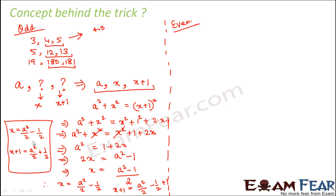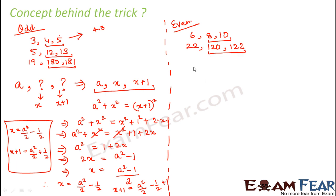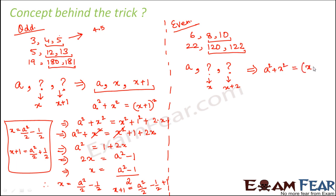On similar lines, we can derive the relationship for even numbers. Let's take some examples of triplets with even numbers: 6, 8, 10 and 22, 120, 122. Here you see that the difference between the two unknown numbers is always 2. So if a is the given even number and x is the first unknown member, then the other unknown member would be x + 2.